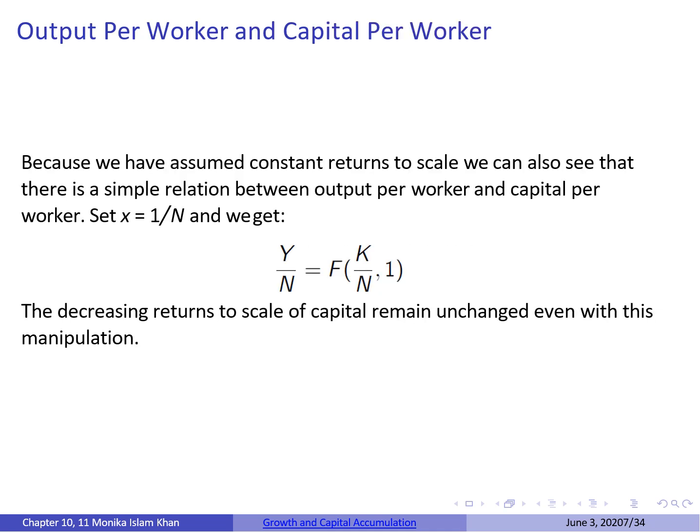Because we have assumed constant returns to scale, we can also see a simple relationship between output per worker and capital per worker. You divide your production function by N — your labour supply — and you get this relationship between output per worker and capital per worker. The decreasing returns to scale of capital remains unchanged even with this manipulation, so Y/N equals f(K/N, 1).